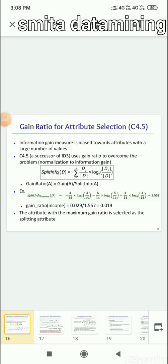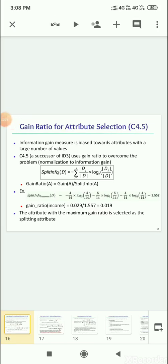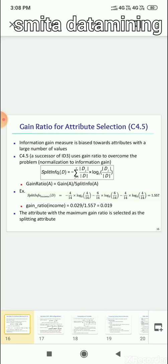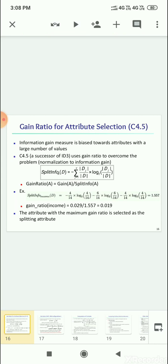Hi everyone, welcome to Smitha Data Mining Channel. Today my video is about C4.5 algorithm in data mining. Information gain measure is biased towards attributes with a large number of values. C4.5 is actually a successor of ID3. The difference is that it uses gain ratio to overcome the problem.